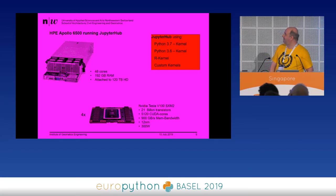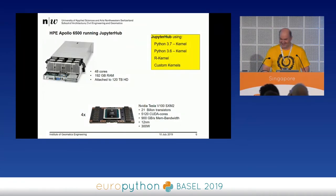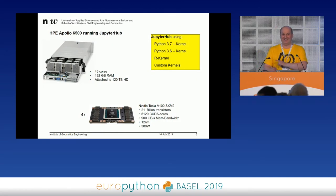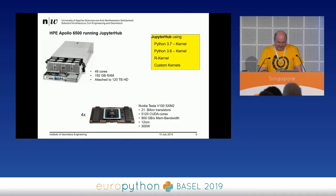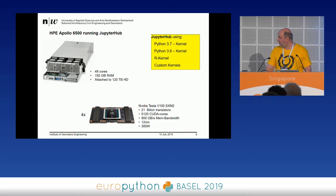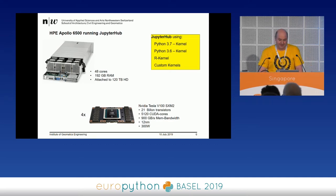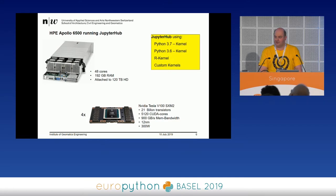If you have terabytes of geodata, you want a really fast and reliable system. We also have four NVIDIA Tesla V100 SXM2 GPUs in it. Each uses a lot of power and has 900 GB bandwidth, so it's quite fast. We use those to create our deep learning models — more about that perhaps later.